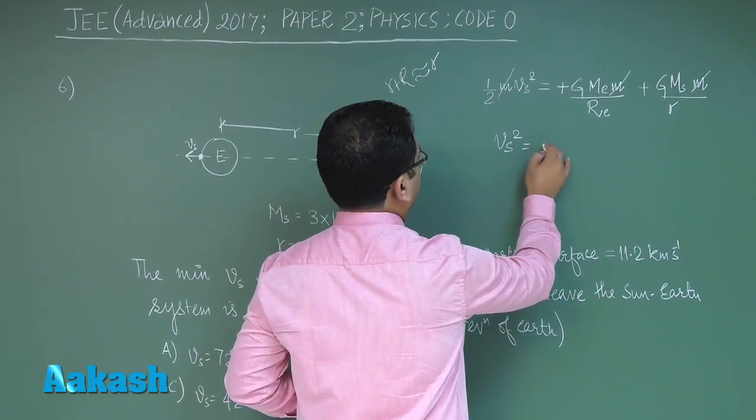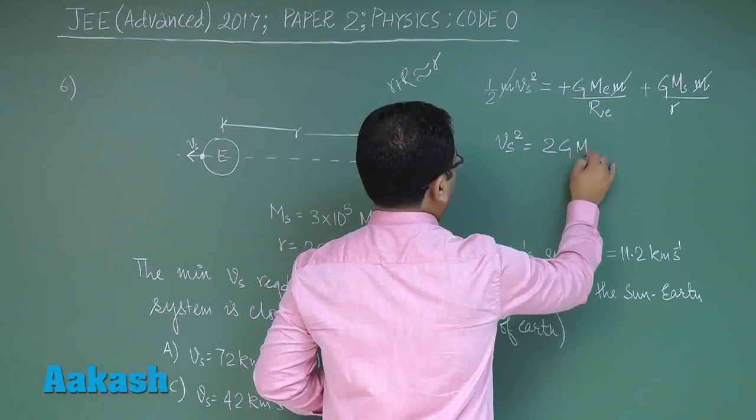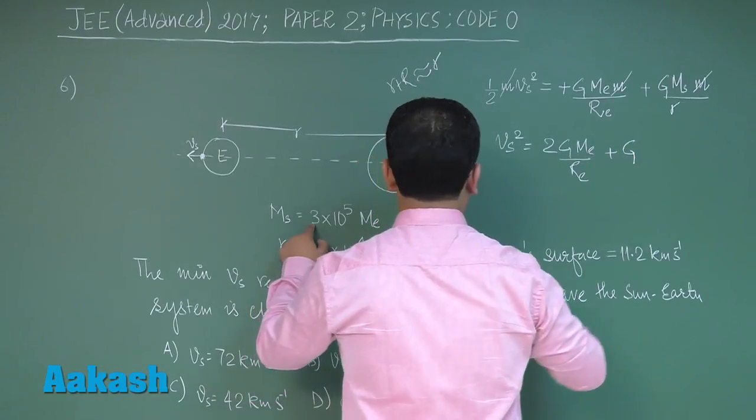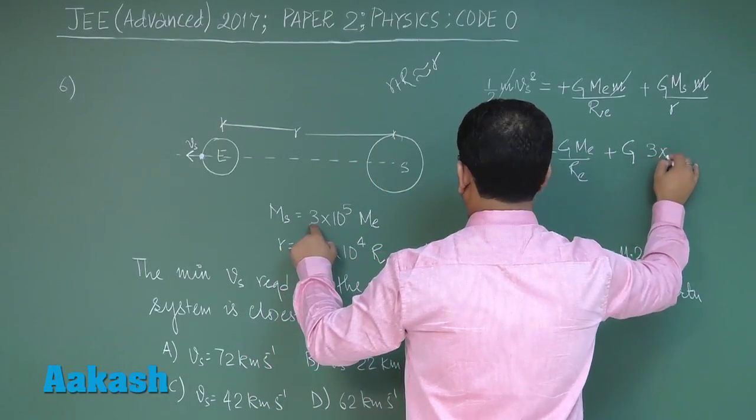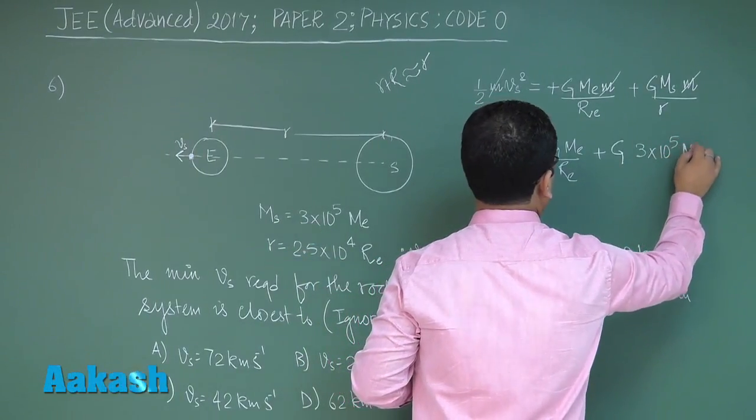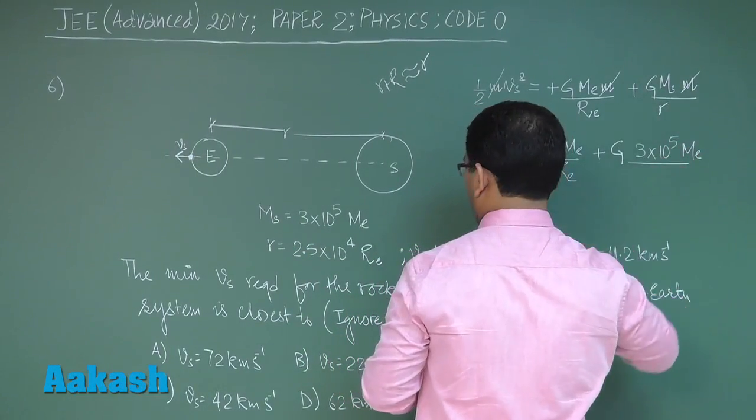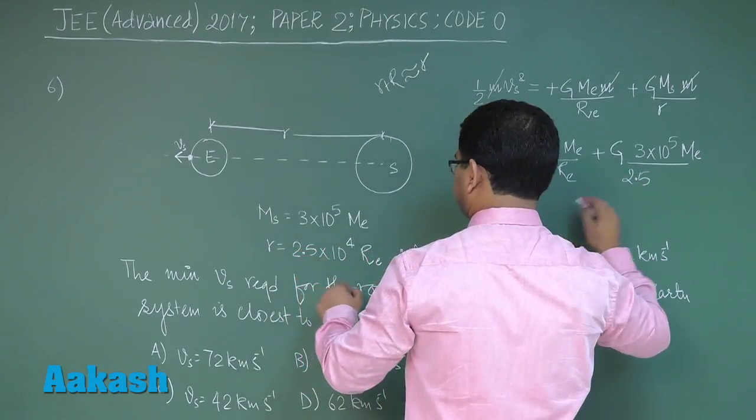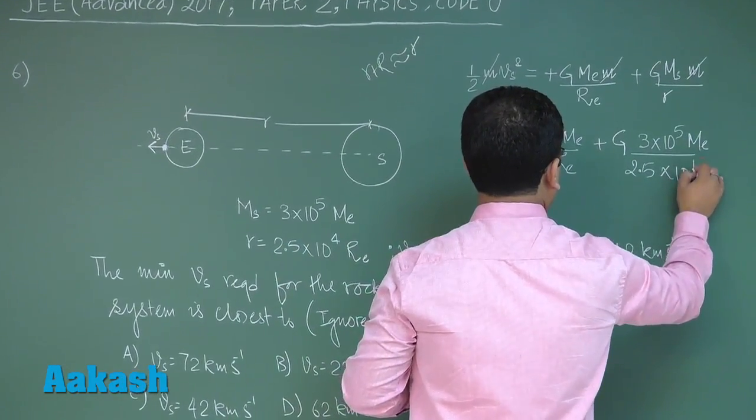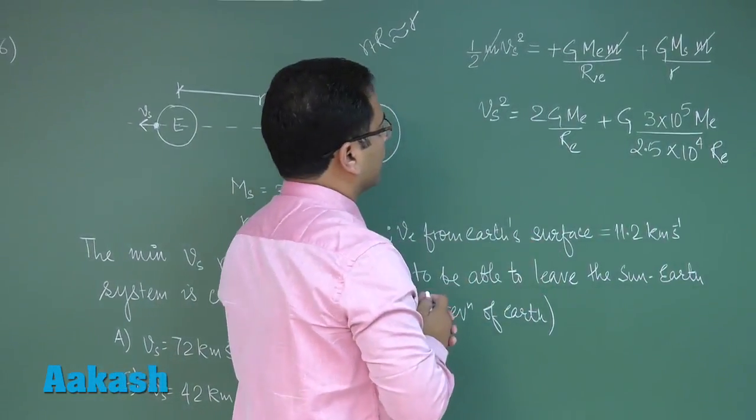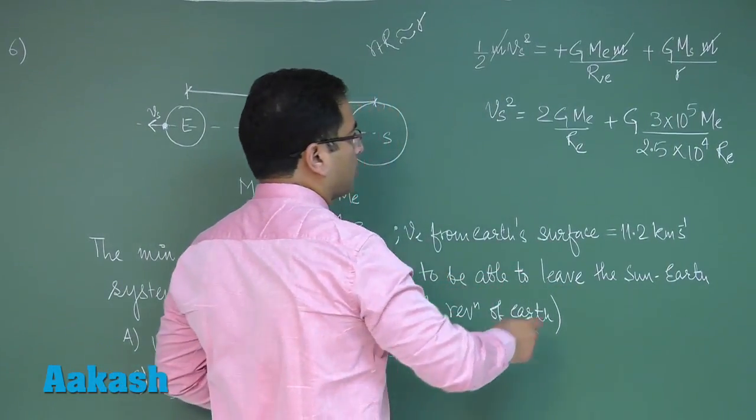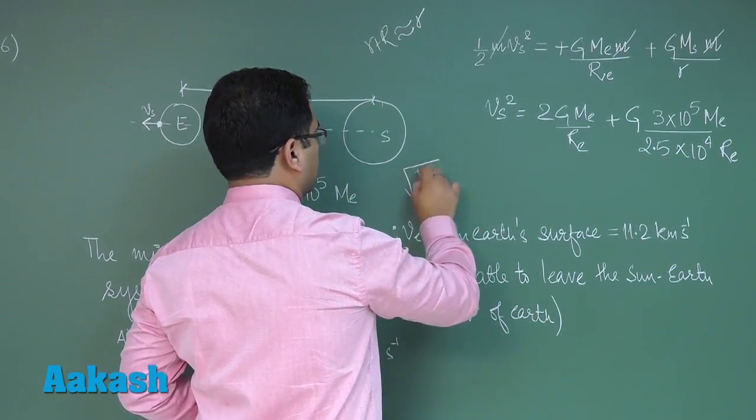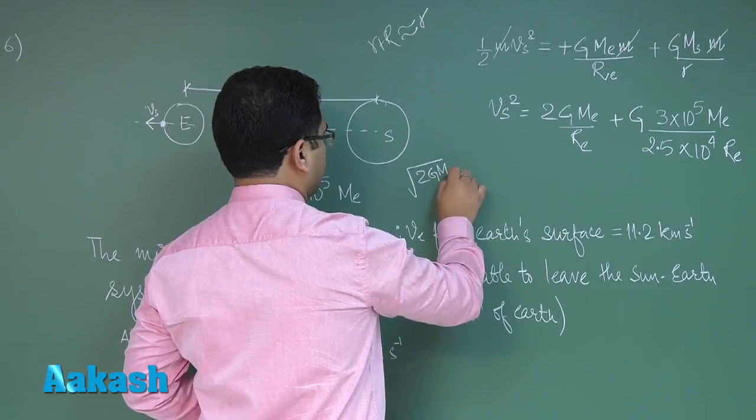Now I'll just show you: vs square would be 2g me by re, and here would be G times mass of sun, which is 3 into 10 raised to the power 5 times mass of earth, by small r which is given 2.5 into 10 raised to the power 4 times re. Now we can take common root G m by re, and the value root 2G me by re is nothing but the escape velocity.